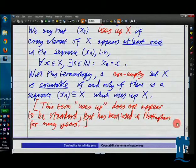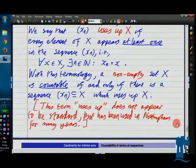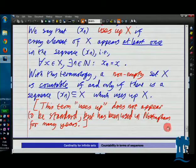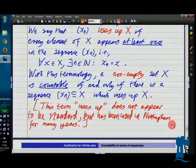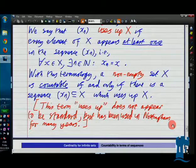Right, so the final result stated at the end of the previous class, which we're just going to finish off now, is that a union of two countable sets is countable. And we're going to use the zipper system and sequences using up sets to do this one.